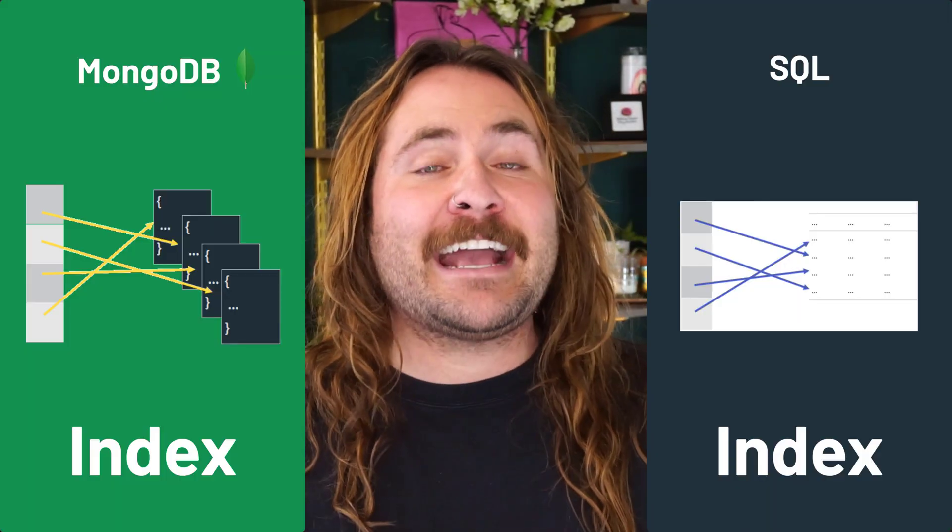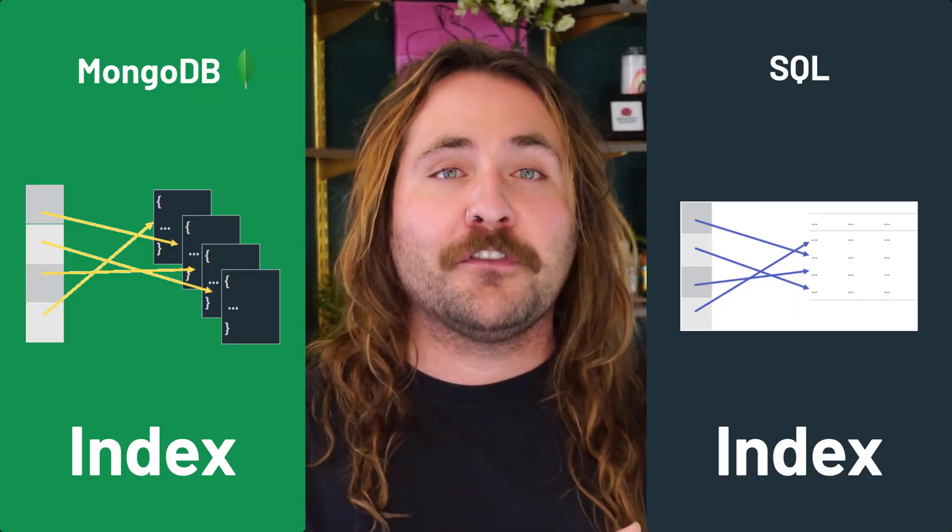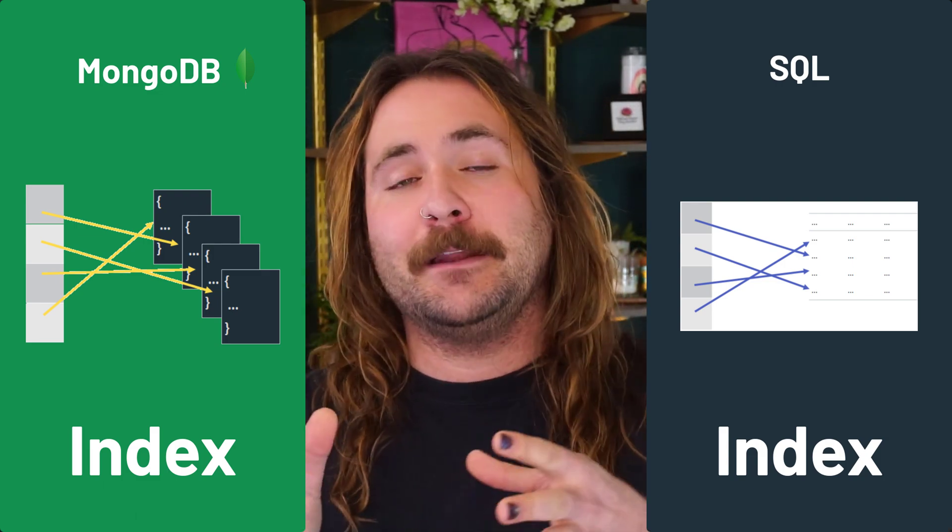It's time for a dad joke now that we've got some basic vocab down. A SQL DBA walks into a bar but leaves immediately because there's no tables. Indexes still behave the same regardless of whether you're working with SQL or MongoDB. Indexes on both databases work by using a B-tree, which allows us to read and find data really quickly. Think of them as a table of contents for your data — so you don't have to scan every page, you can jump directly to what you're looking for.